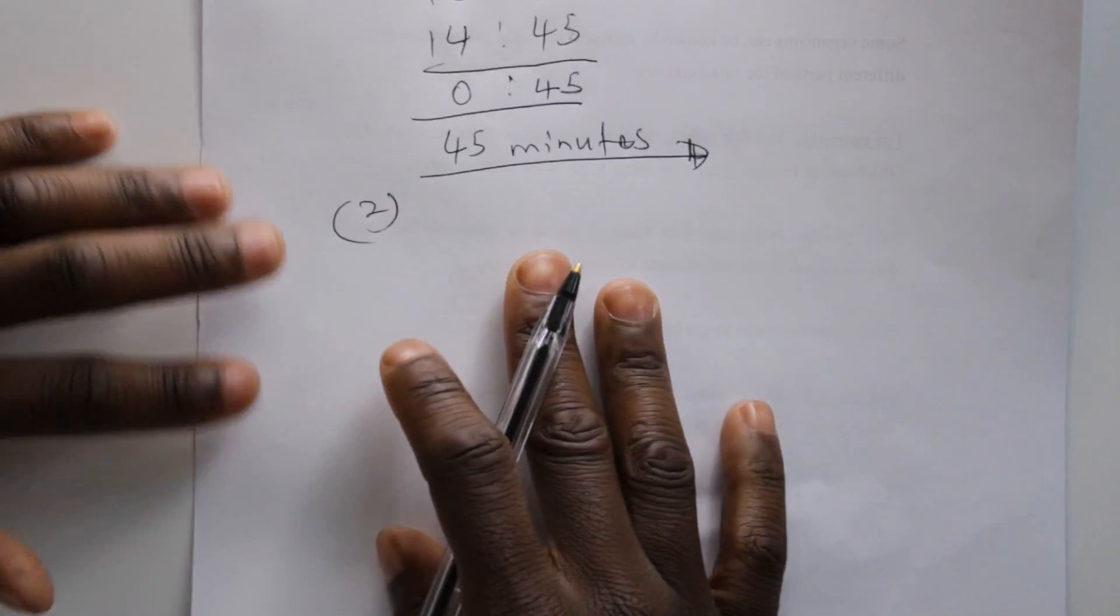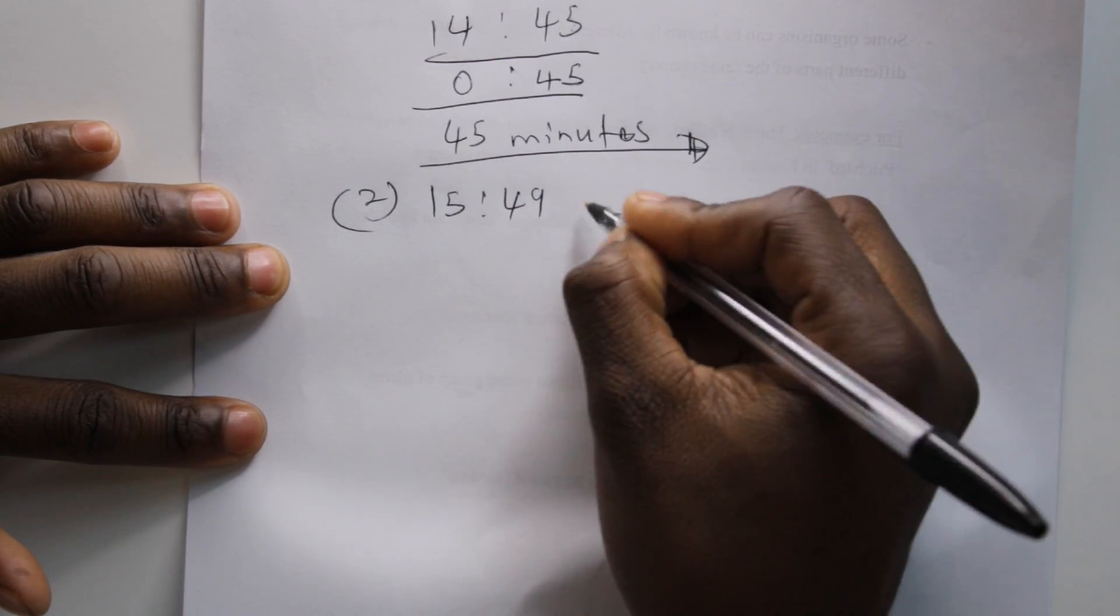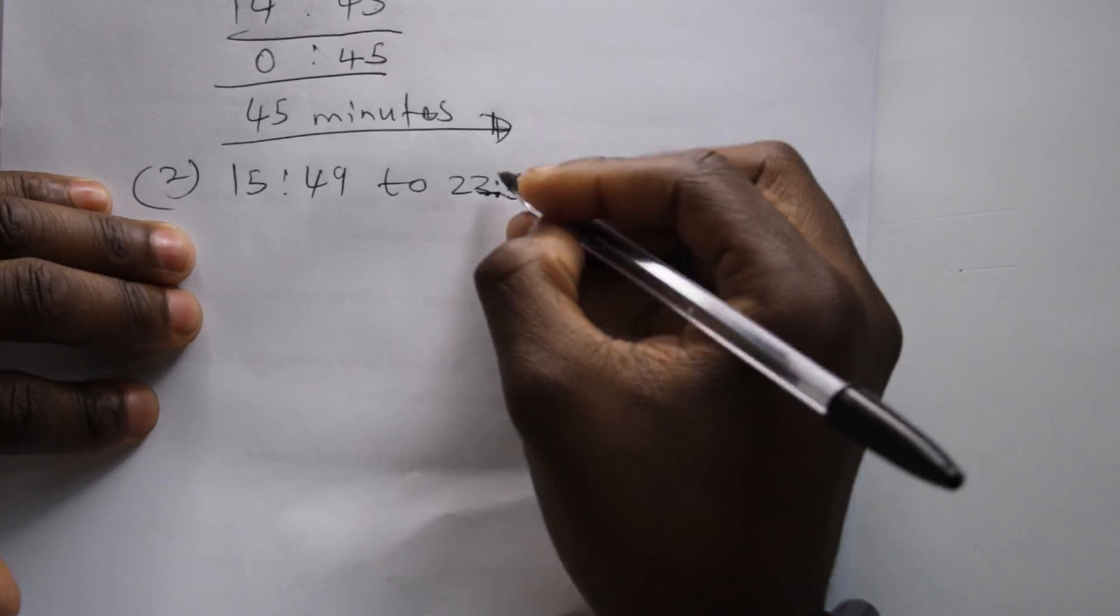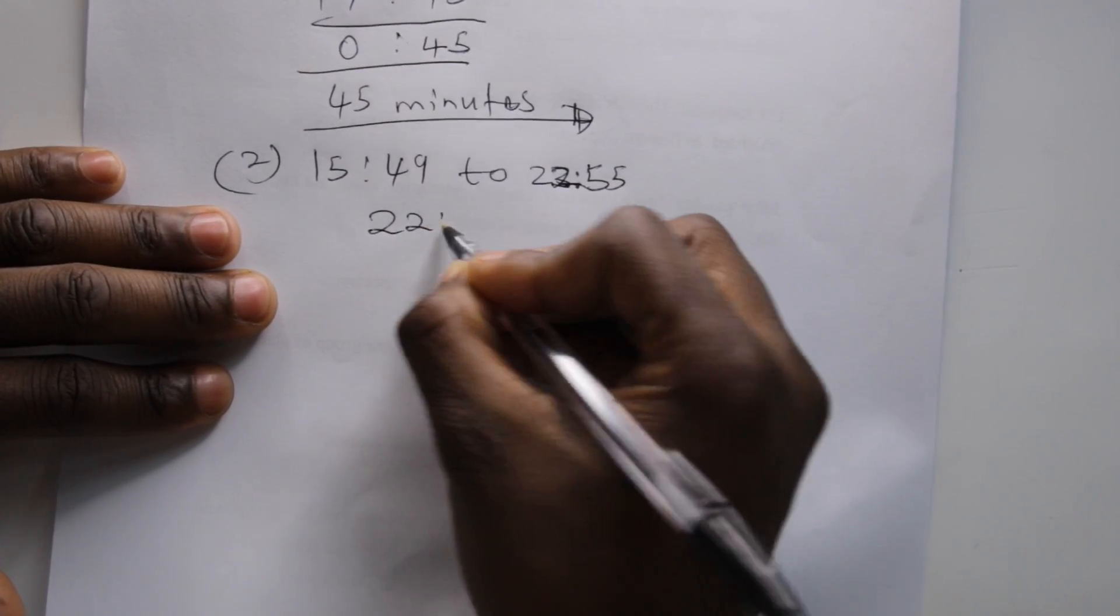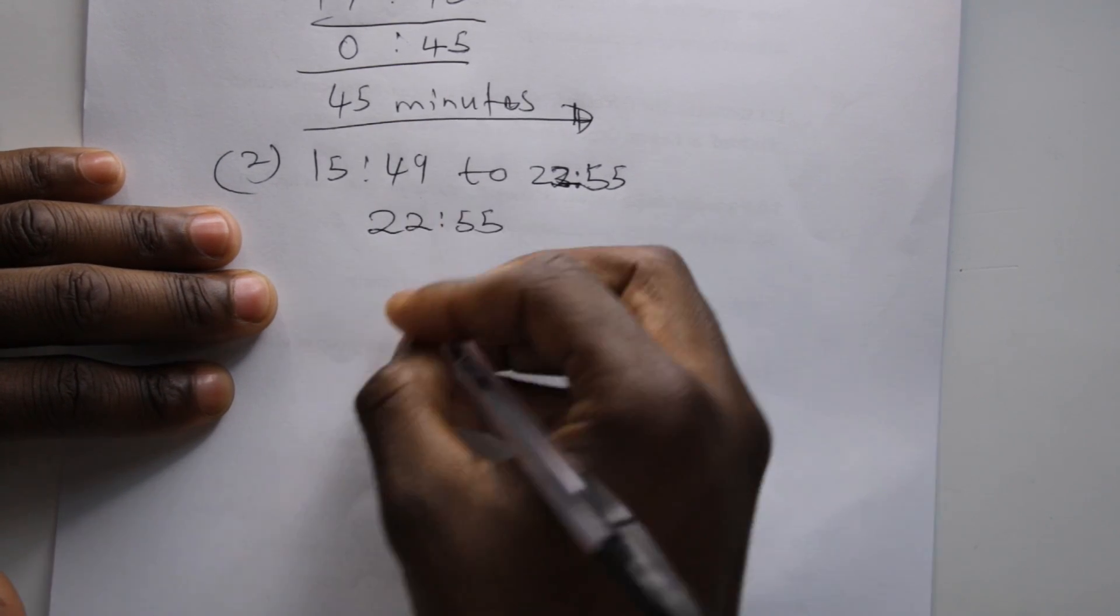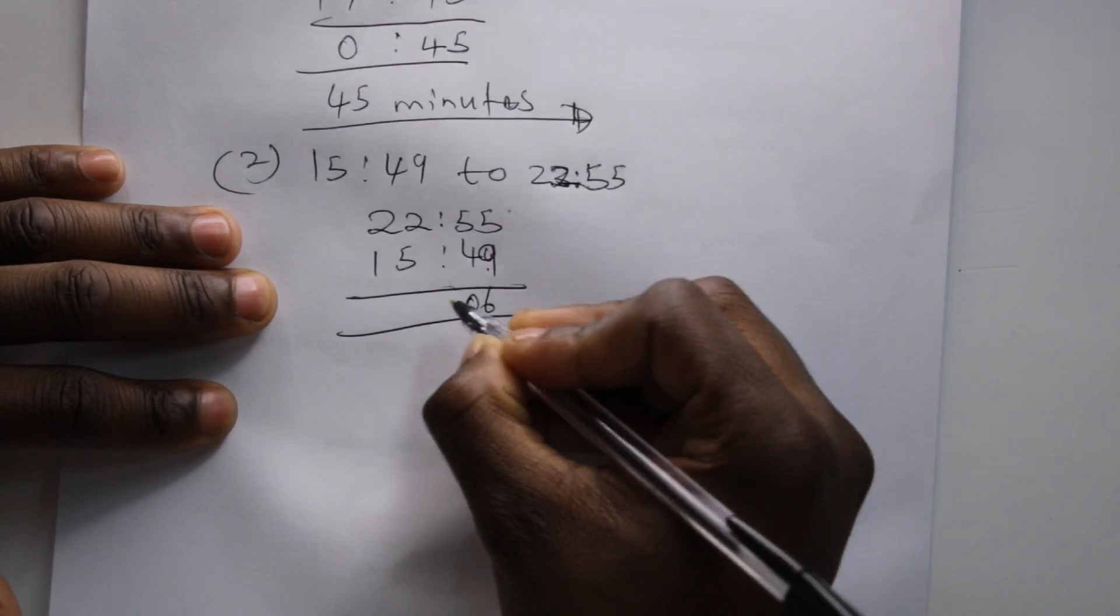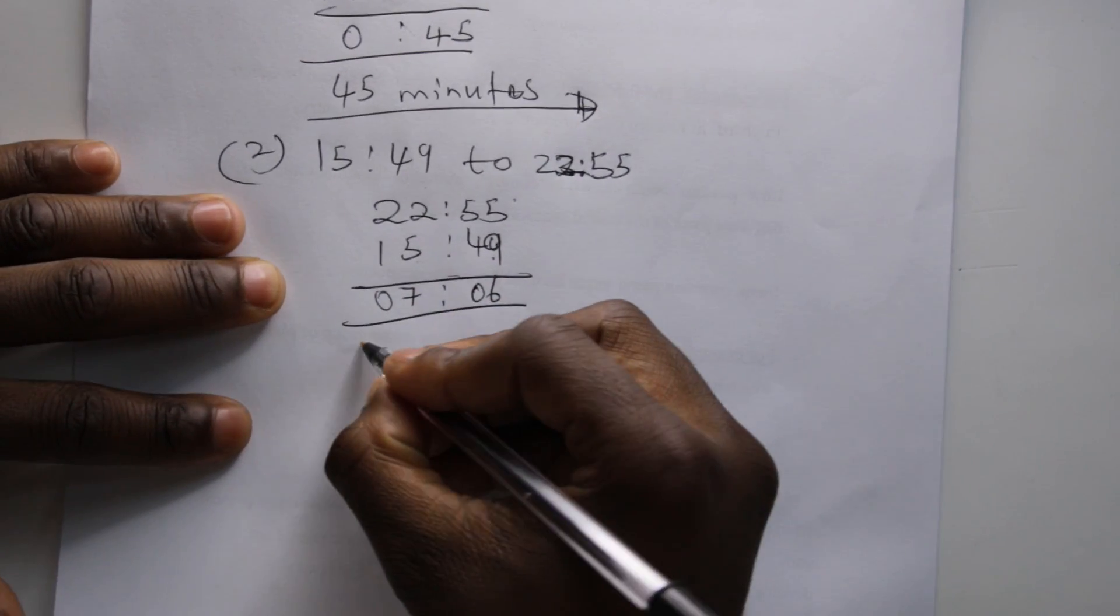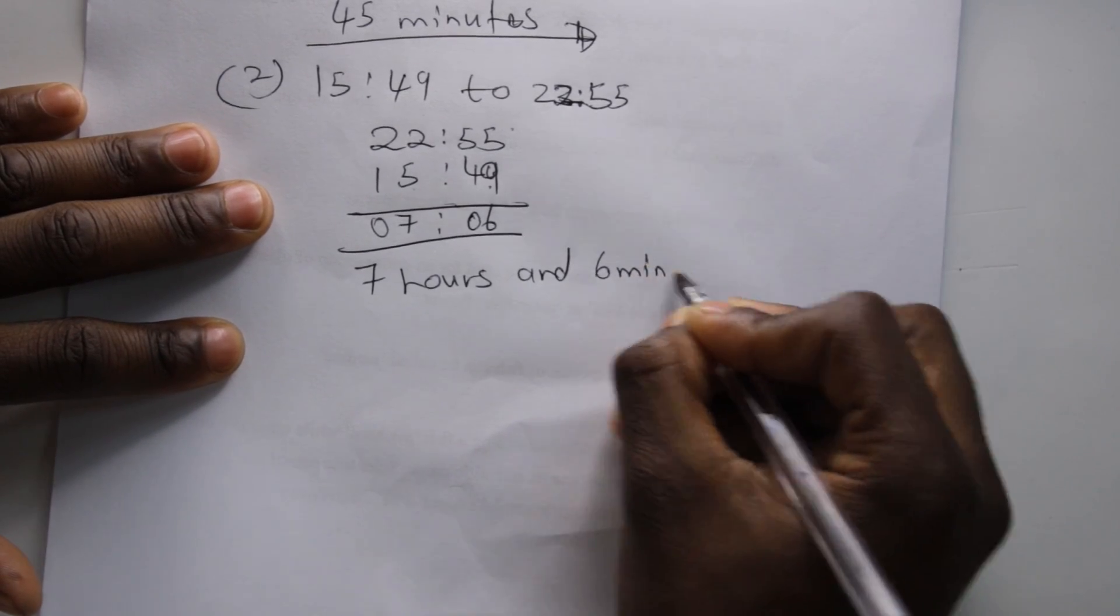Number 2, if we had 15:49 to 22:55. We'll put the biggest hour on top, then the smallest hour on the bottom. 49 subtract from 55 will be left with 6 minutes. 15 subtract to 22 will be left with 7 hours, 7 hours and 6 minutes.